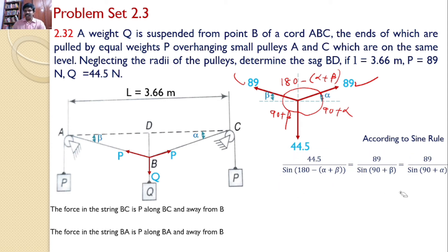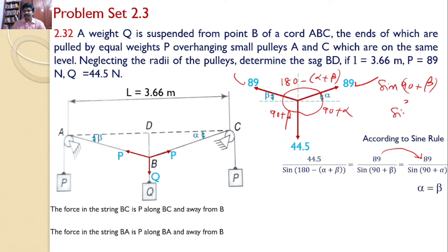Taking the two expressions with 89: 89 divided by sine(90 + beta) equals 89 divided by sine(90 + alpha). Since the numerators are equal, the denominators must be equal, so sine(90 + beta) equals sine(90 + alpha), which gives us alpha equals beta.